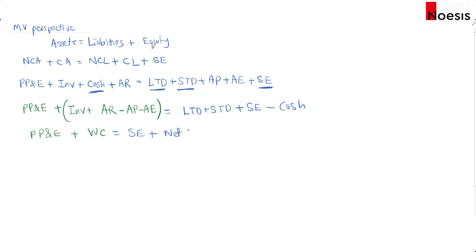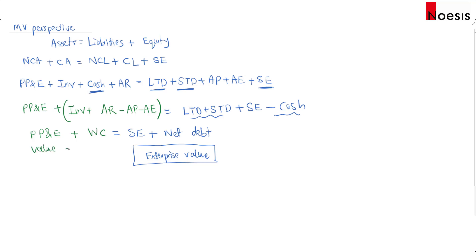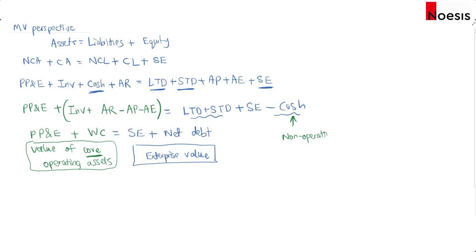So fixed assets — property, plant and equipment — plus working capital equals enterprise value, which is shareholders' equity plus net debt, where net debt is total debt minus cash. The left-hand side represents the value of the company's core operating assets. Enterprise value represents the value of the company's core operating assets, excluding cash, which is assumed here to be non-operating or excess cash not used for daily working capital.